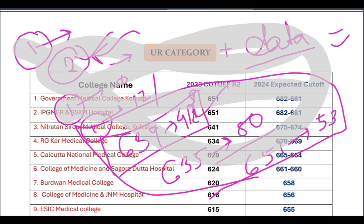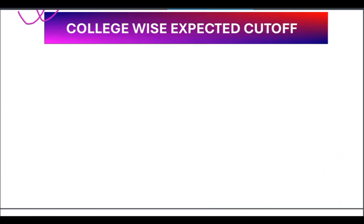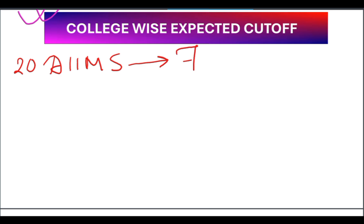India has a total cut-off situation where if you look at scores around 705, you can see that the cut-off is 705. The total range being discussed is 7-0-5.